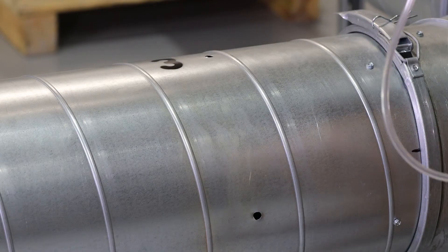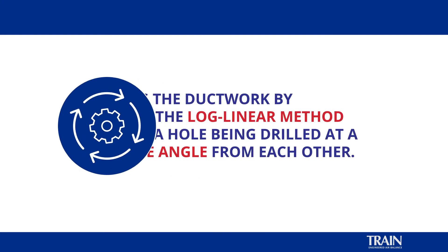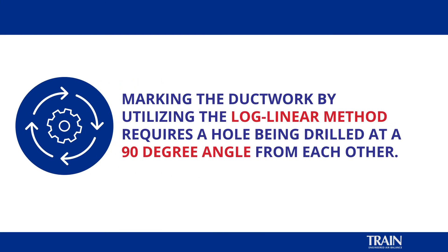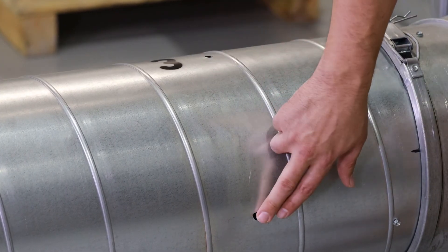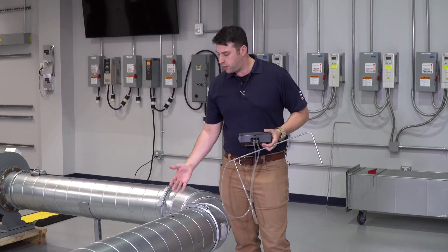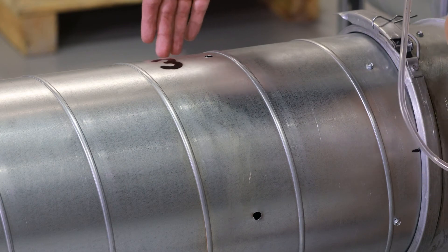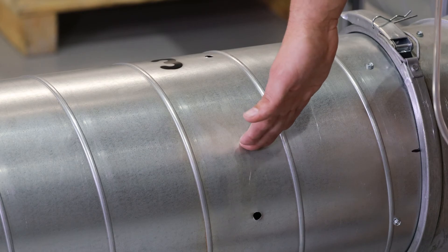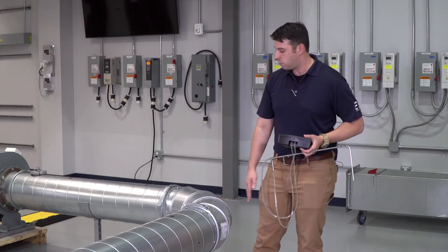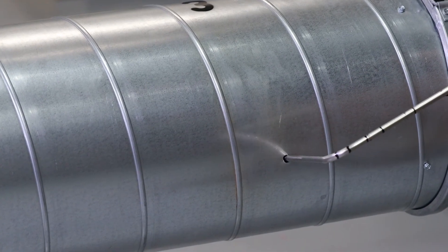For our next demonstration, we are going to perform our pitot tube traverse of our round ductwork. Marking the ductwork utilizing the log linear method requires a hole to be drilled at 90 degrees from each other. In this instance, we have drilled a hole at the top of the ductwork and on the side of the ductwork. Technicians in the field might find that the holes need to be drilled in a different location, such as two positions at the top. For this purpose, we will go ahead and use the top and the side, making sure that the pitot tube is properly oriented.